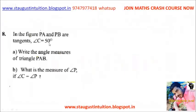In the figure, PA and PB are tangents, angle C is 50 degrees. Write the angle measures of triangle PAB. What is the measure of angle P if angle C is equal to angle P? This is equal.